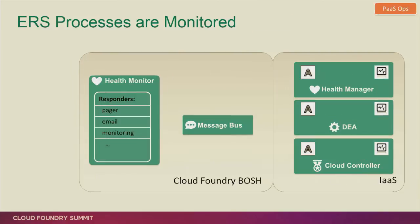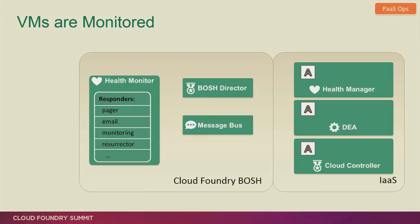Those two levels were in the Elastic Runtime. Moving down into the BOSH layer, you might ask: what happens if the health manager itself goes down? We're actually monitoring all of the processes running on the virtual machines in the Elastic Runtime. If one of those processes goes down, two things happen. First, the process is restarted. Second, the BOSH agent running on that node sends a message to BOSH via the message bus. The health monitor — not to be confused with the health manager in the Elastic Runtime — picks up that alert and can send out pages, emails, and notifications to monitoring software.